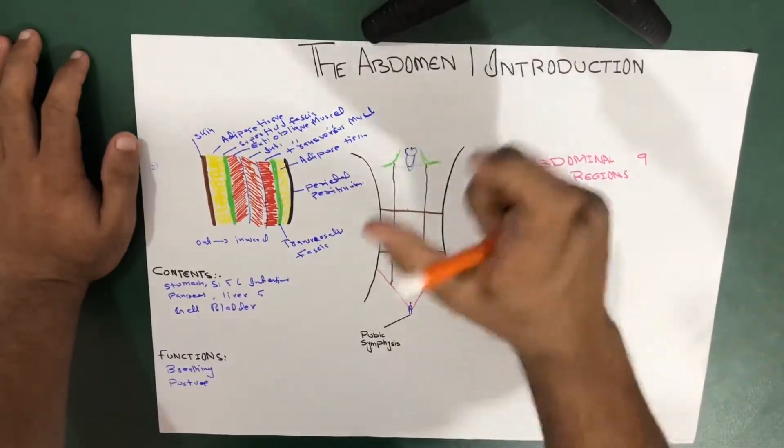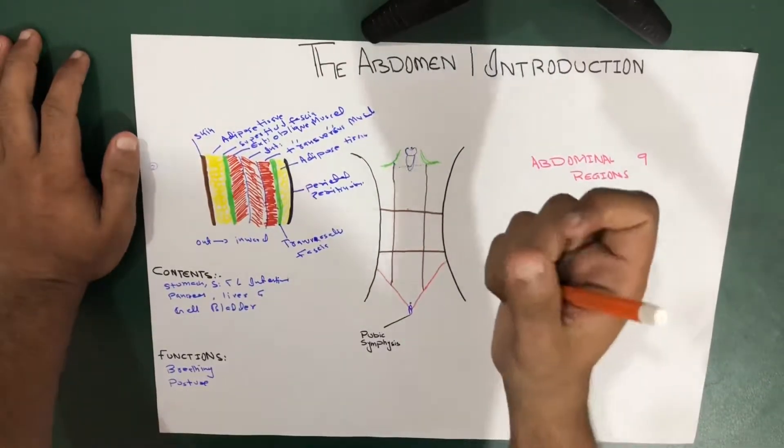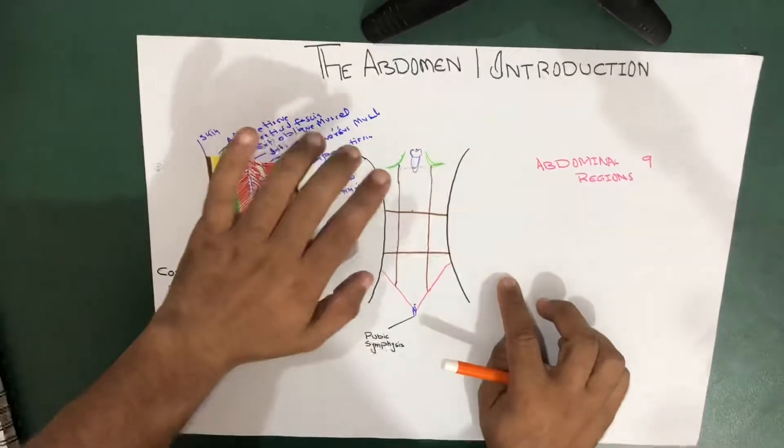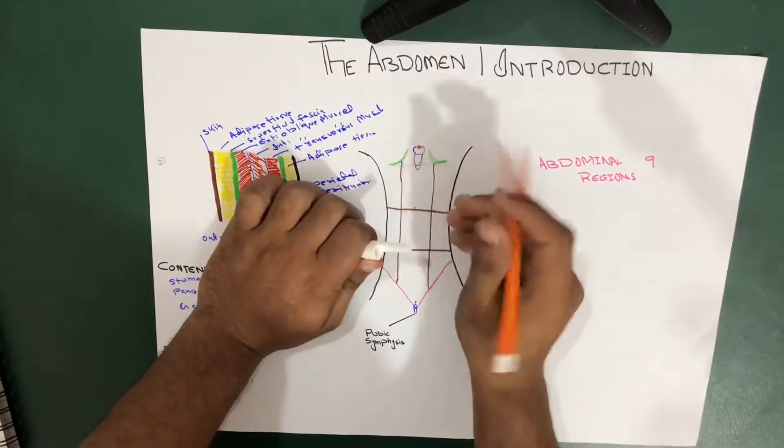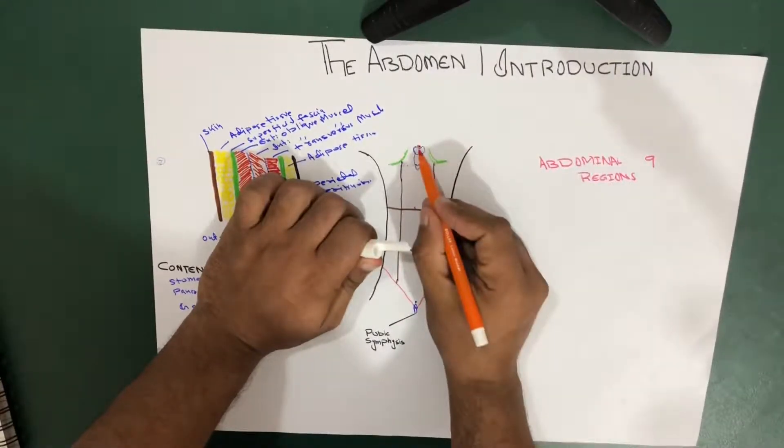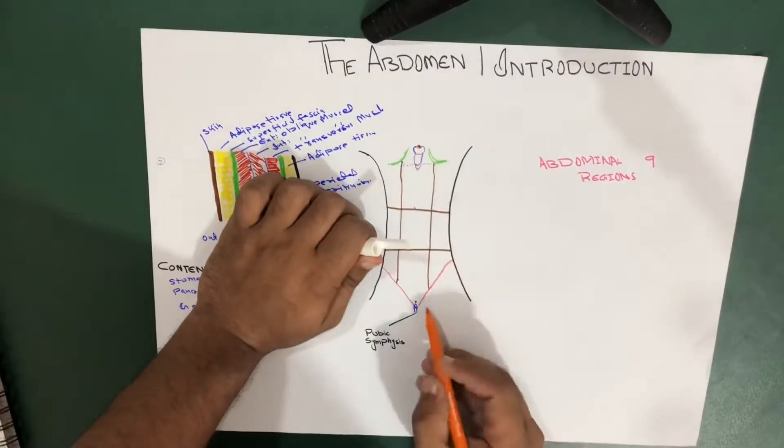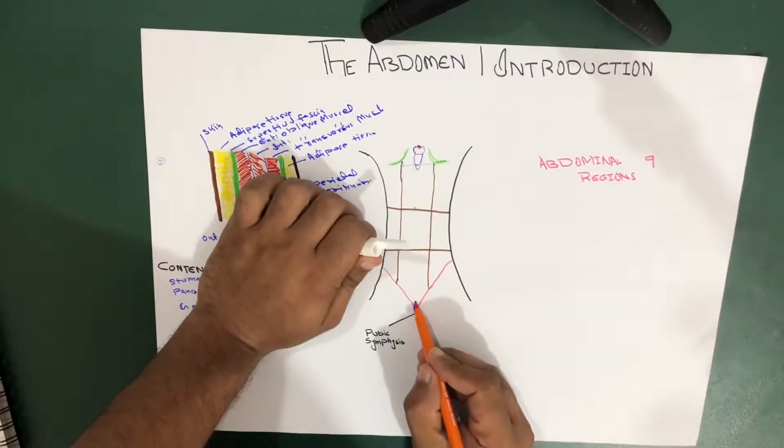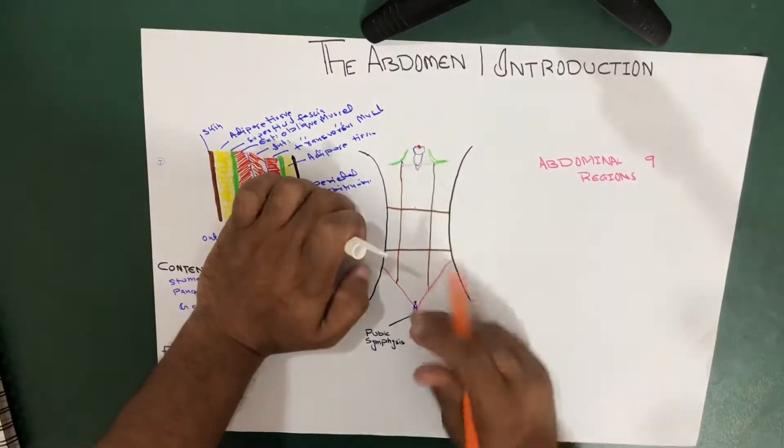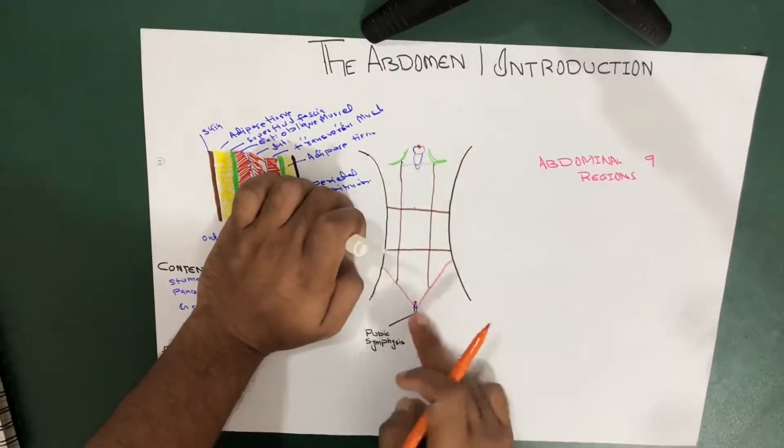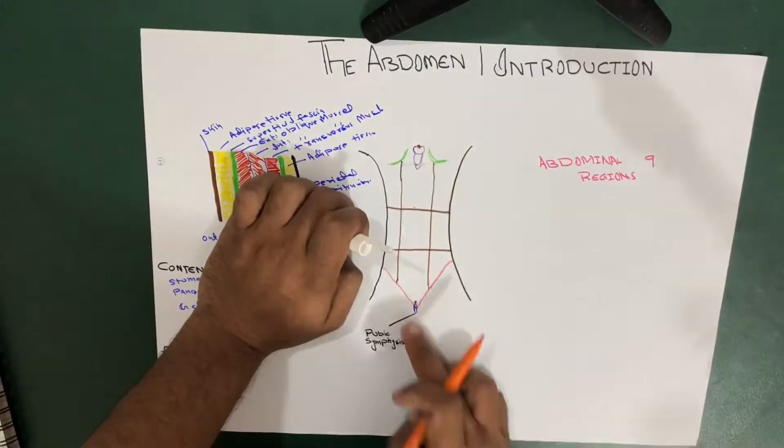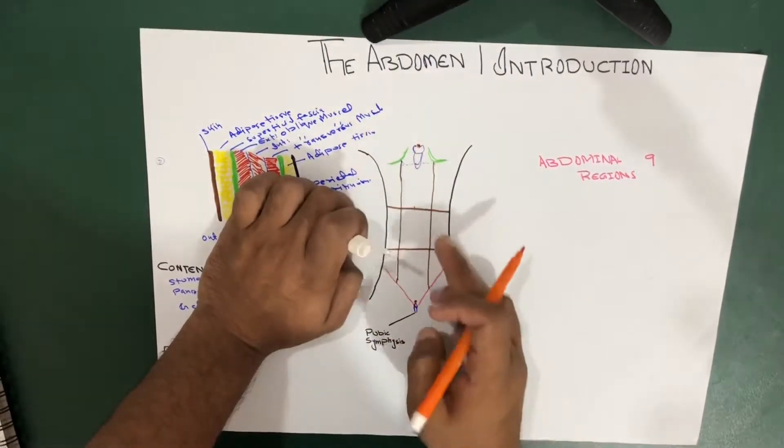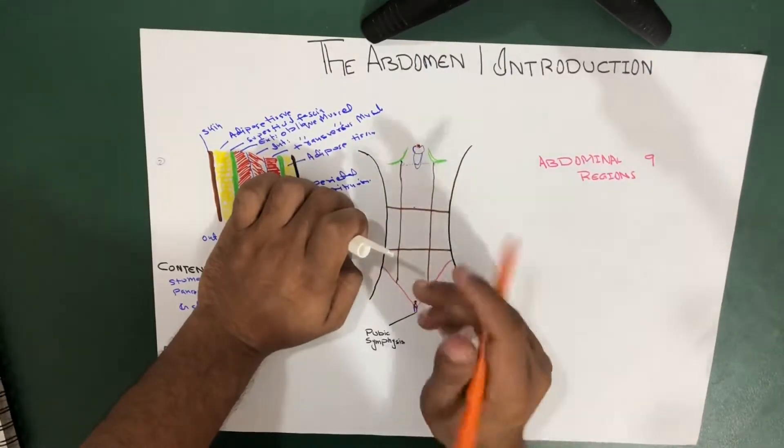So before starting, before making some lines, I have to make two concepts clear. First, we have to take two dots, one dot over here, over the suprasternal notch, that is above the sternum, and there is a pubic symphysis over there, another dot over here. So in between, or you can say mid to these two points, we take another point,